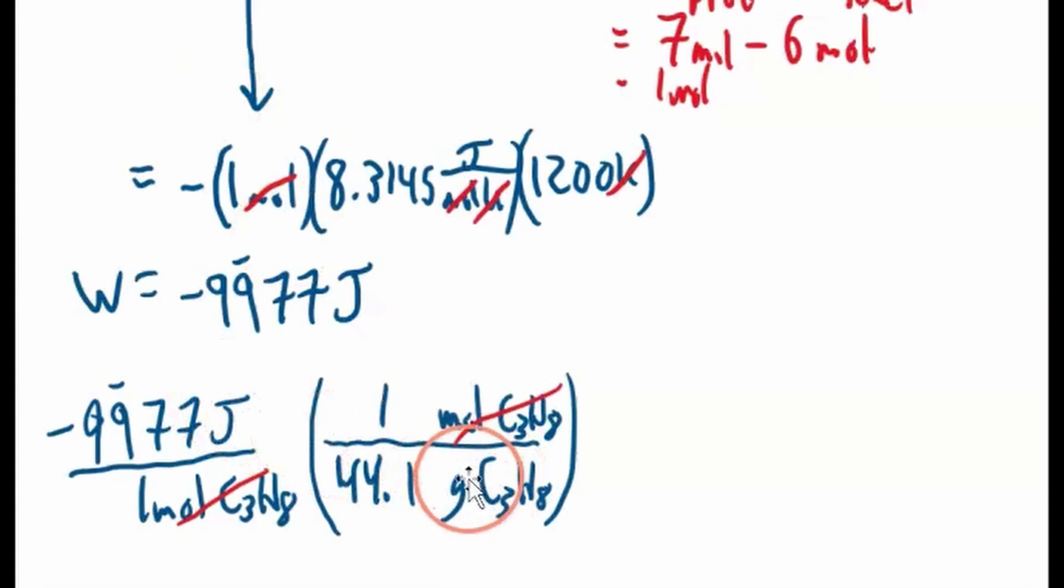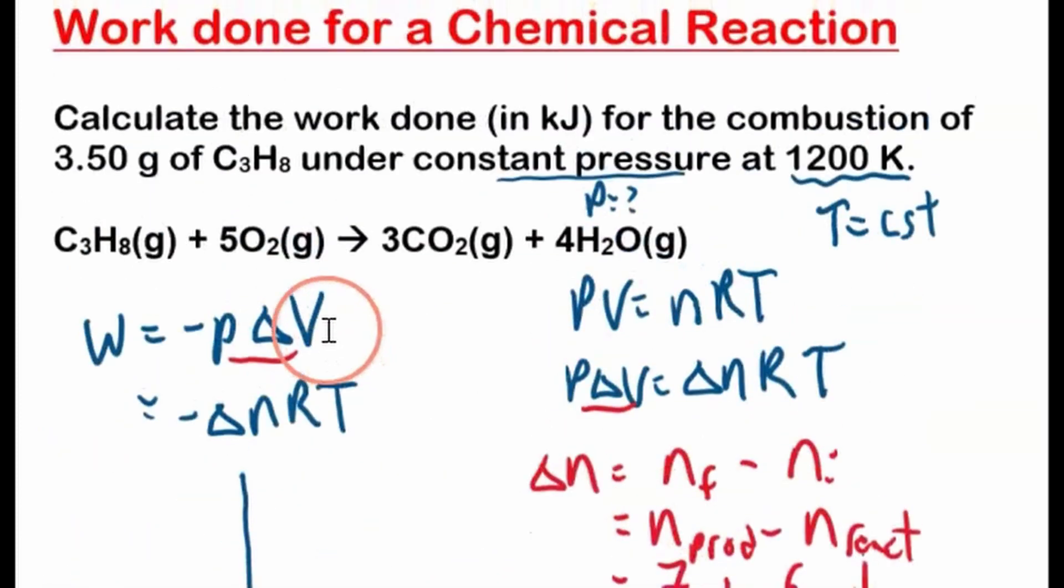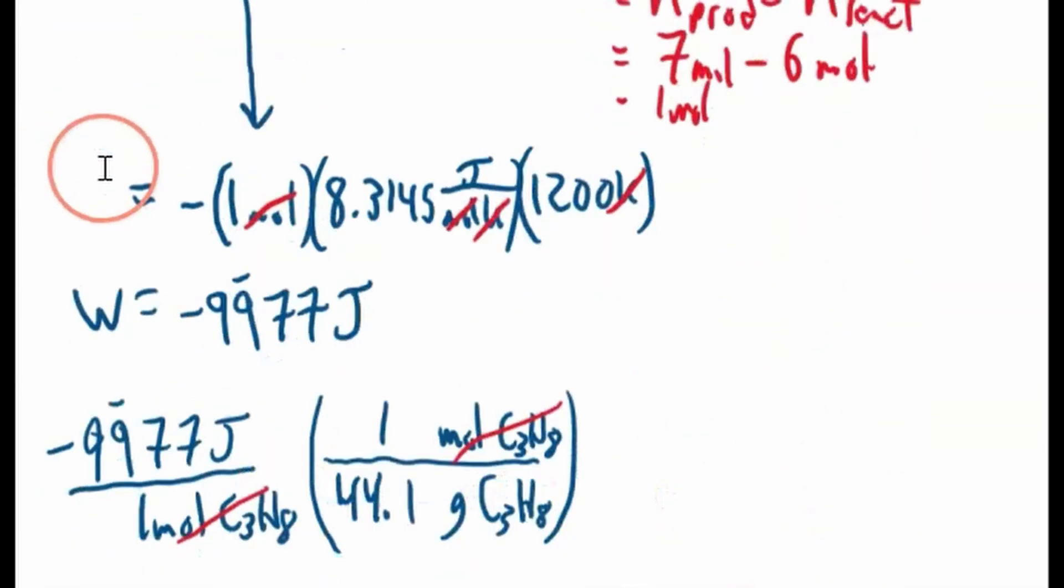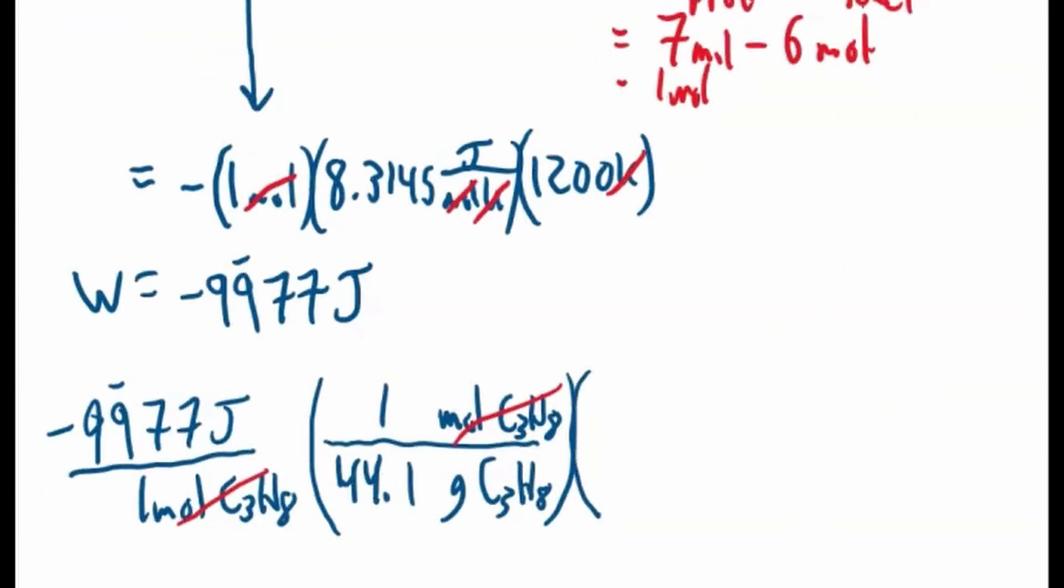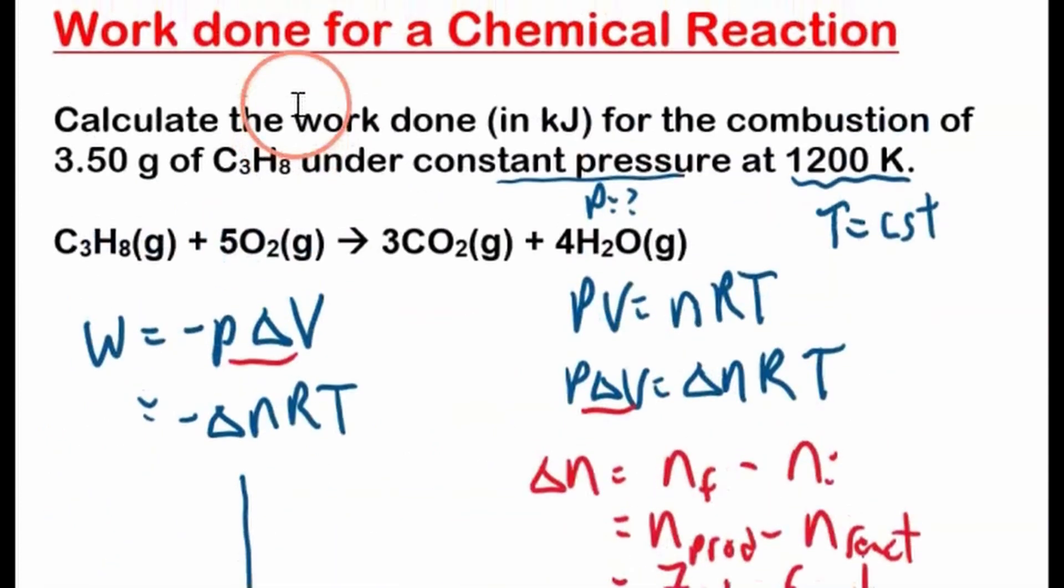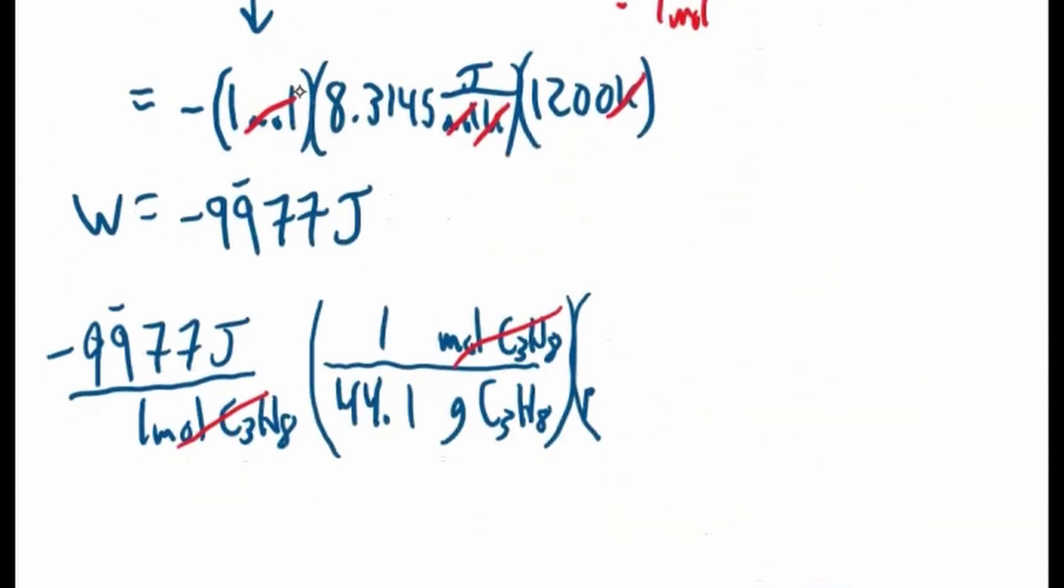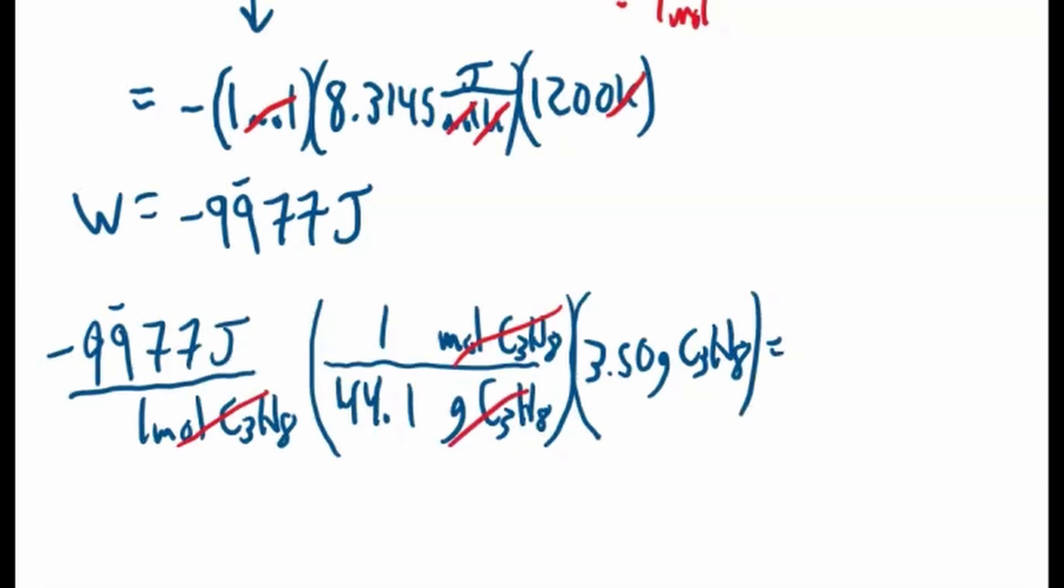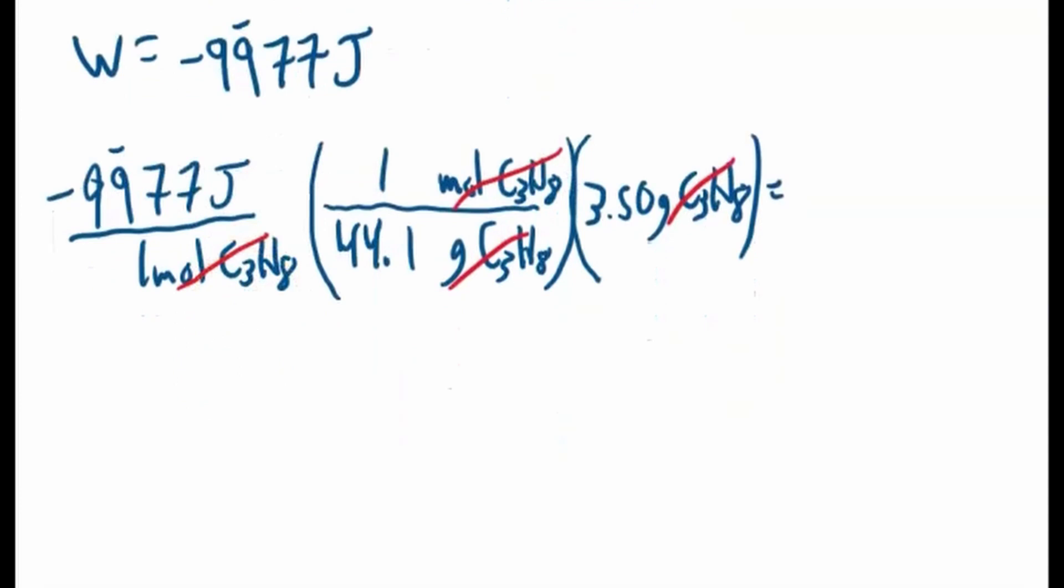So now we're in joules per gram. And we don't care about joules for one gram - if we take this divided by that, it's how many joules per one gram. We want it in 3.50 grams. So we need to multiply this by 3.5, there we go. 3.50 grams of C3H8. And now grams of C3H8 cancel out, and we'll get joules for that reaction.